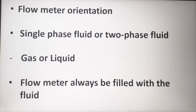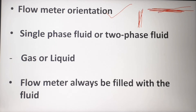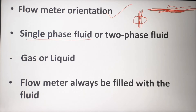Whenever you are deciding on installation, first you have to decide the orientation — whether you are going to install in a horizontal line or a vertical line. Second, you have to decide whether you are measuring single-phase fluid or two-phase fluid. Based on that, the flow meter and PT meter model will change.